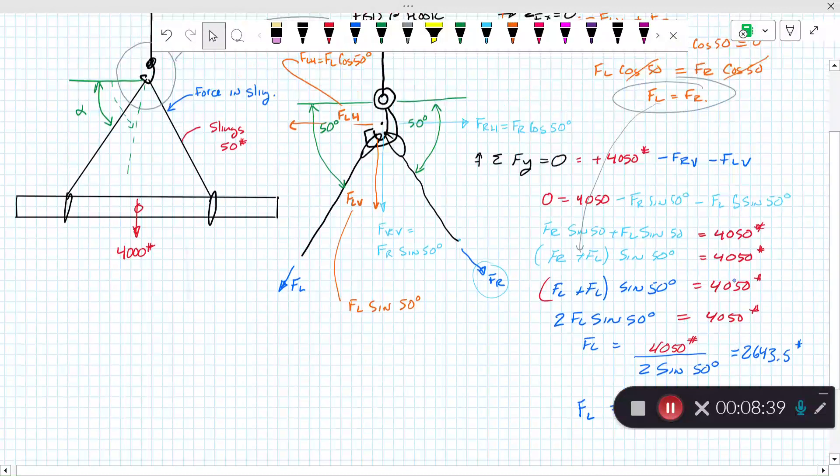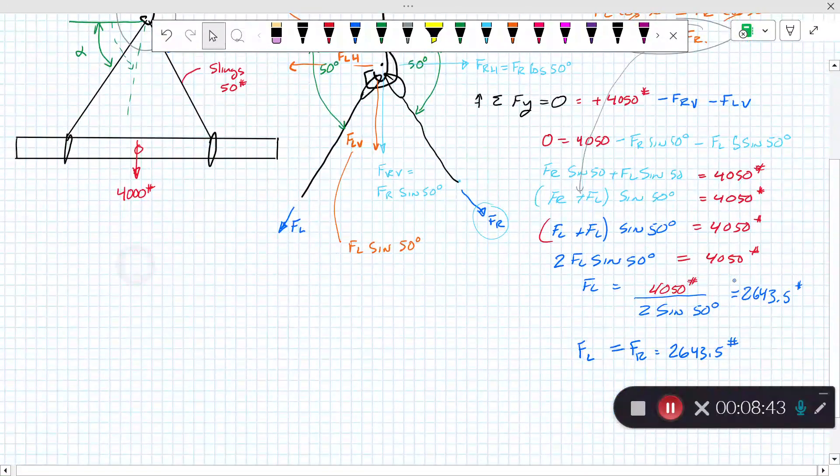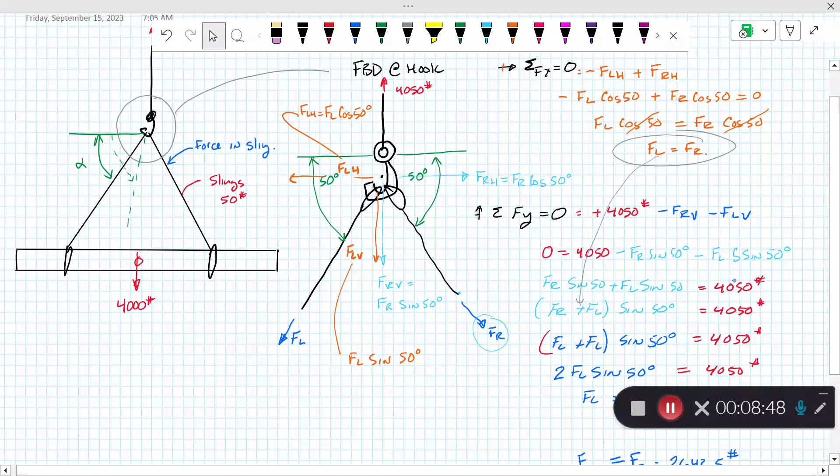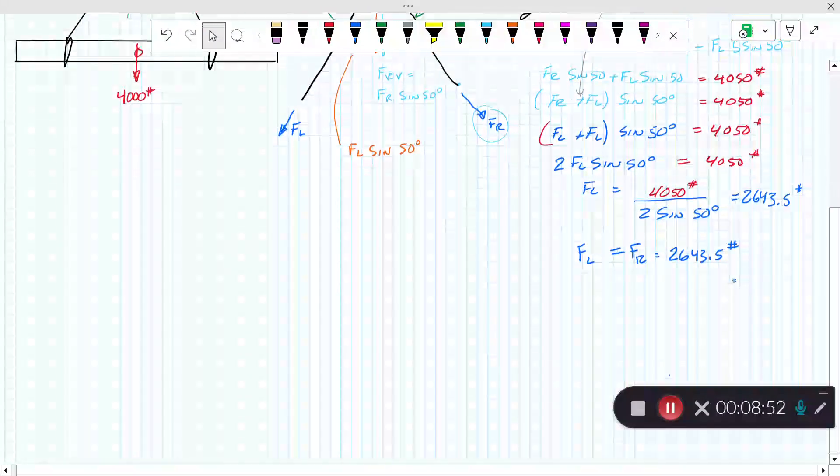Now if I just split the two in halves, the 4,050 in half, I would get 2,025 pounds, half of the 4,050. So that shows that as the angle gets wider, the forces in the slings get larger.